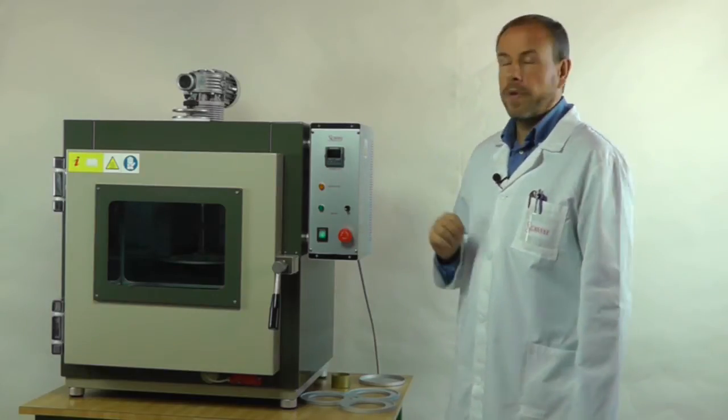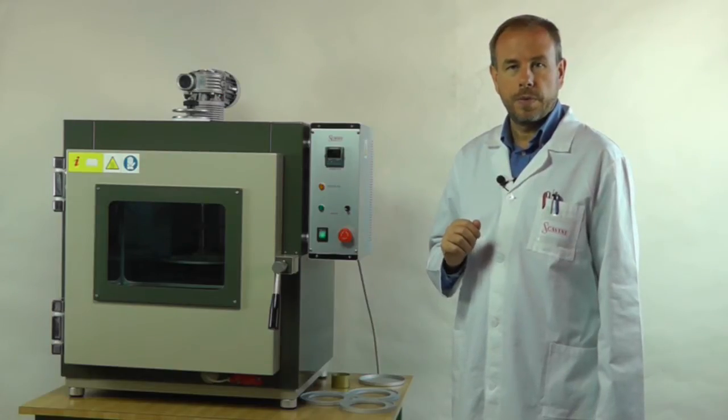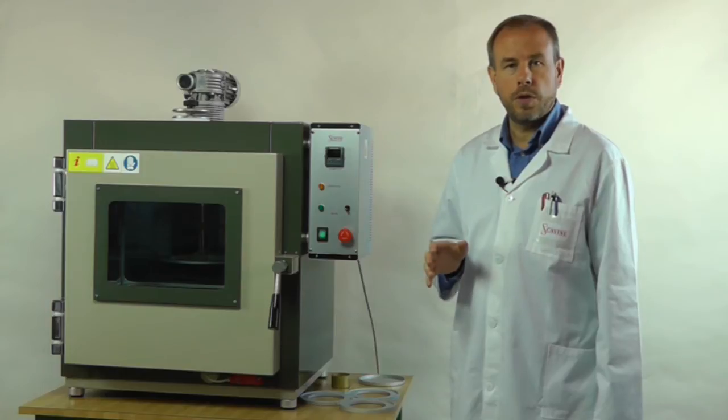On the top of the oven we see the gear reduced motor for the rotation of the shelf. The motor is electronically controlled for a precise regulation of the speed.